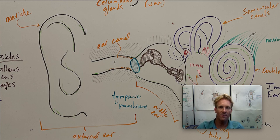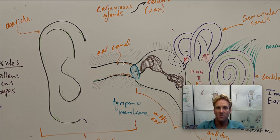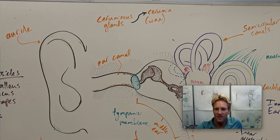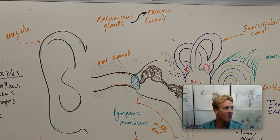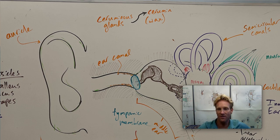In a healthy person, the external ear should be filled with air. There are special glands called ceruminous glands — these are modified sebaceous glands in the epidermis of the ear canal — and they produce cerumen, which is just a fancy name for earwax. Earwax is actually really important for the health of our ears because it helps to naturally clean the ears as that wax is produced near the base of the ear canal and pushed to the surface. It also prevents insects and other things from entering and living in our ears.